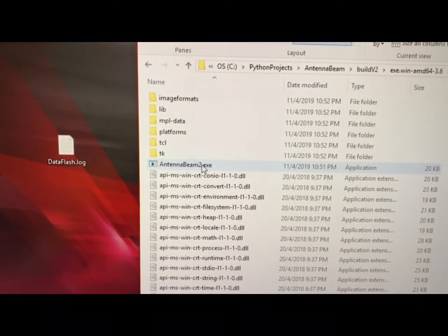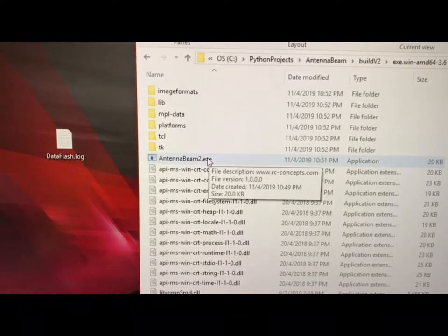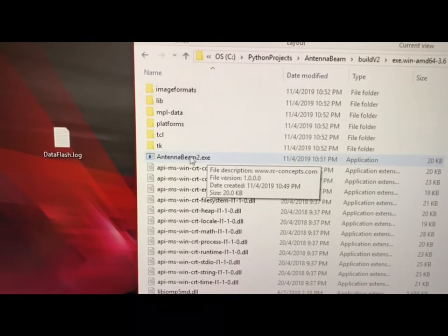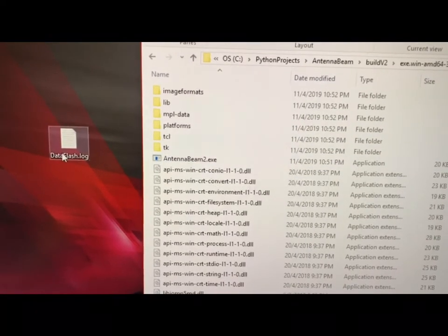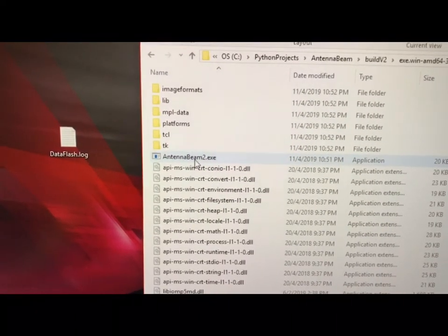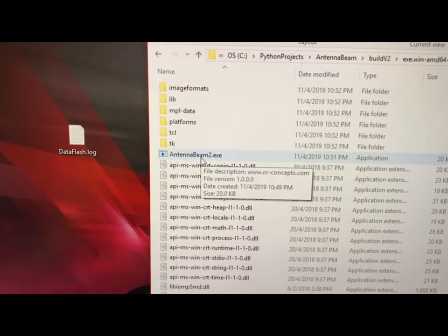Here I've packaged the Python code to become an executable. As you can see, I'm going to double click on antenna beam 2.exe, and this program will directly read the text file and plot the radiation pattern of the antenna.